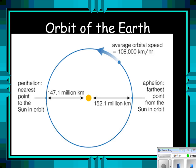This picture shows the orbit of the Earth — the perihelion, the nearest point to the Sun in orbit, shown in millions of kilometers, and the aphelion showing the farthest point from the Sun, also in kilometers. It also shows the average orbit.